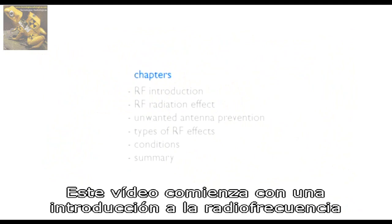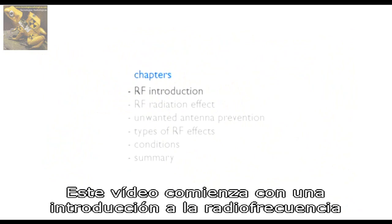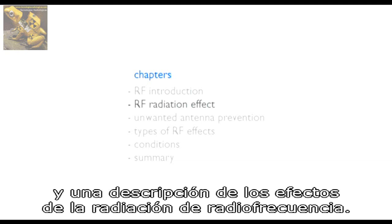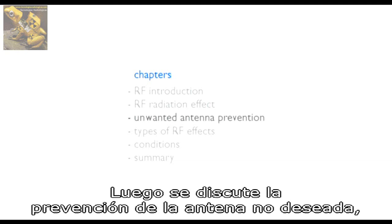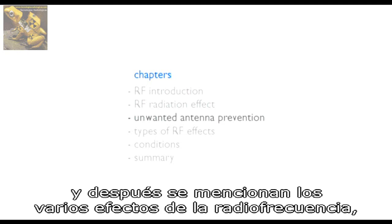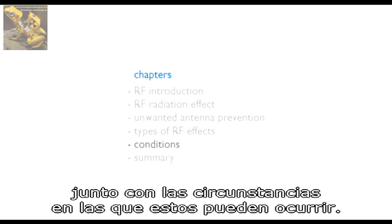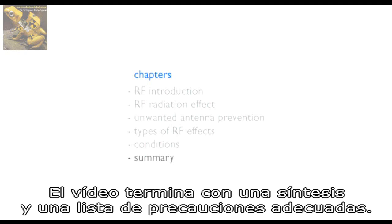This video starts with a brief introduction to RF and an explanation of the RF radiation effect. Next, the prevention of unwanted antennas is discussed. Then, the various types of RF effects are mentioned, together with the conditions under which they can occur. The video concludes with a summary and a list of the appropriate safety precautions.